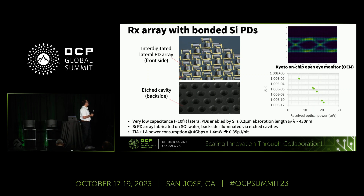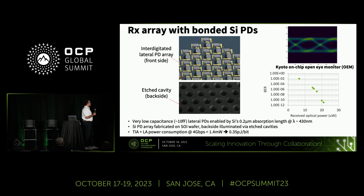The PD array is manufactured in silicon-on-insulator and is backside illuminated via etched cavities. These PDs are lateral PDs with very low capacitance — about 10 femtofarads — which enables very low TIA power. The power consumption is about 0.35 picojoule per bit. The eye monitor output shows that we capture the TIA output, and the bit error rate versus received power curve shows we can achieve 10⁻¹² bit error rate at 23 microamps received power.